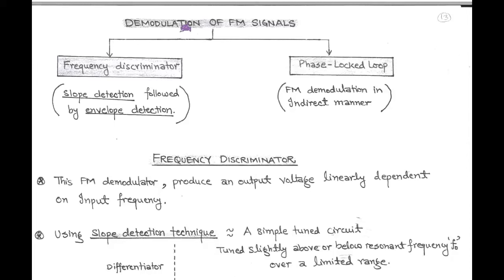Next, we are going to discuss demodulation of FM signals. There are two methods for the detection of FM wave: first is frequency discriminator and second is phase locked loop.